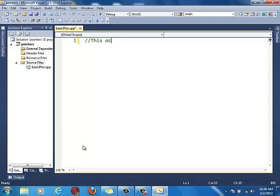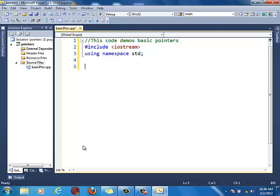We're simply going to say demos, basic demos, basic pointers. iostream. So first let's declare a regular variable called num, int num equals 0. So this is just a regular variable. Int variable.